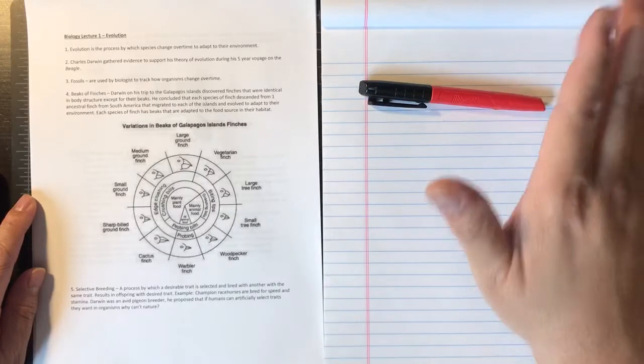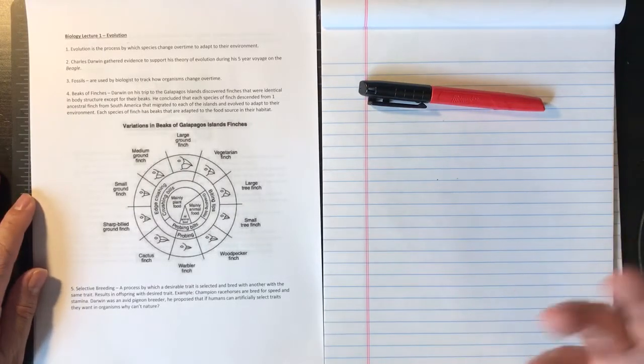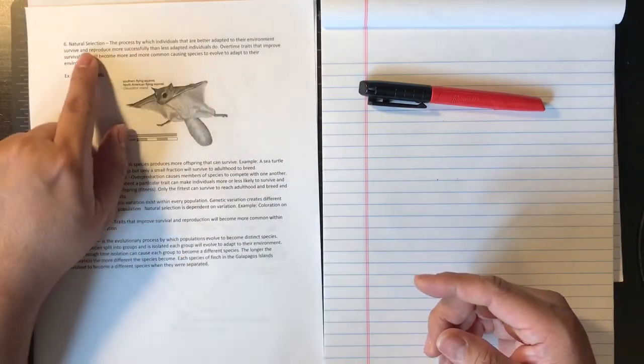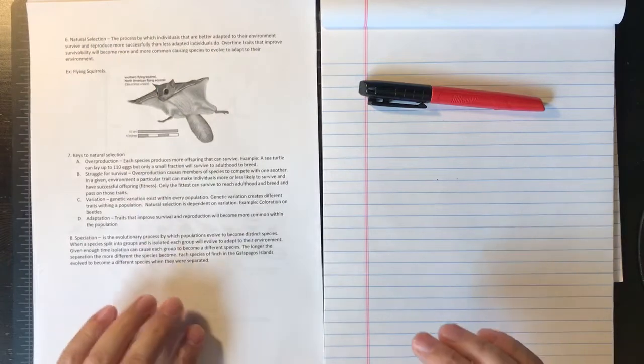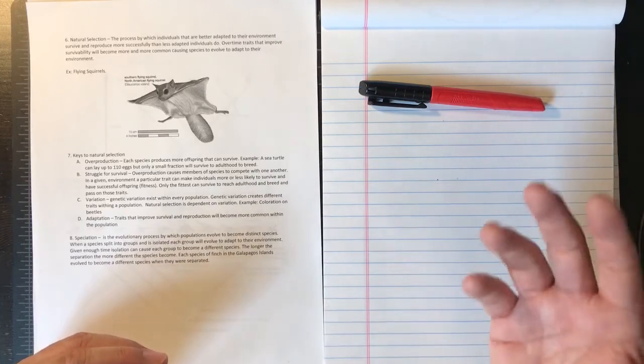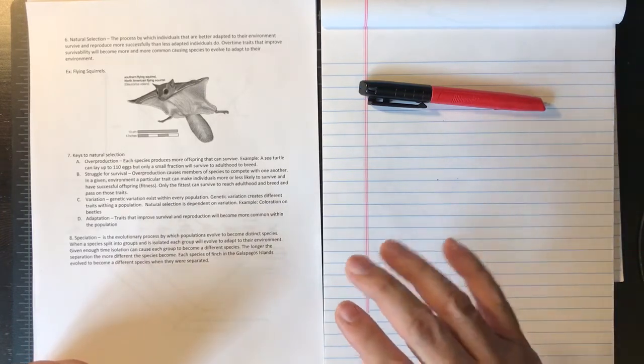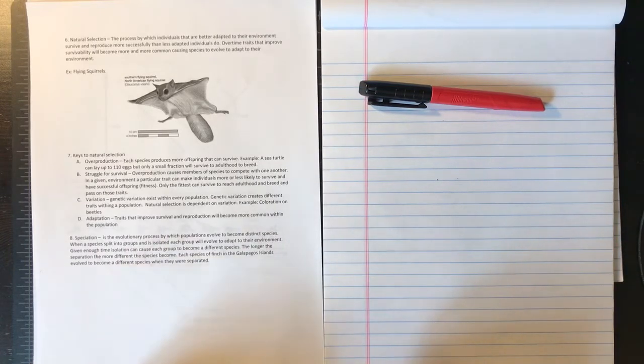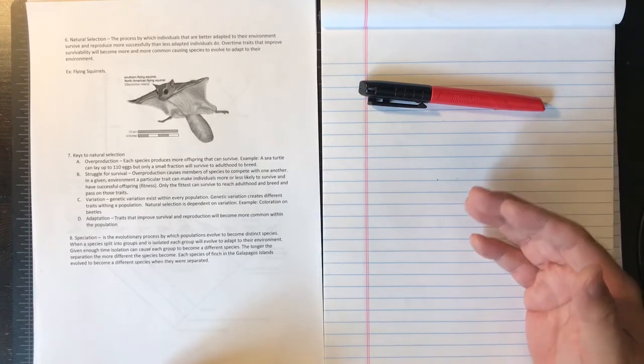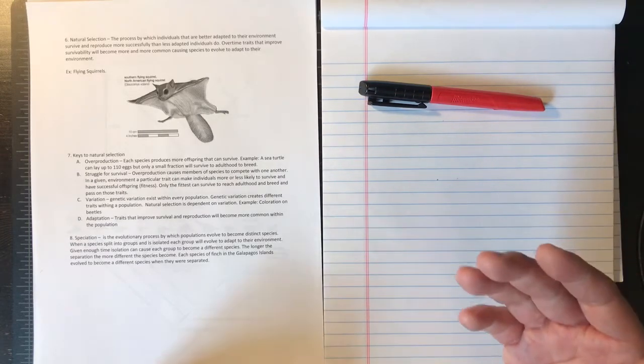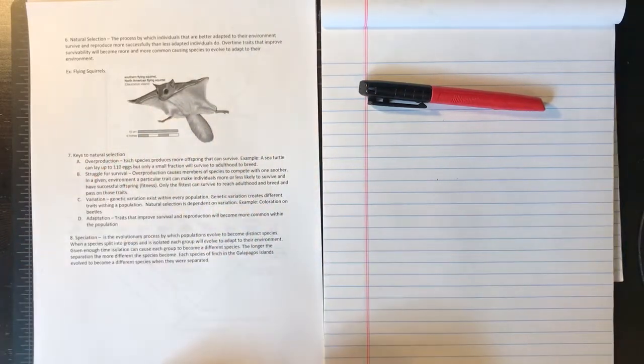According to Darwin, nature could also select traits, which brings us to this idea of natural selection. Number six: natural selection is the process by which individuals that are better adapted to their environment survive and reproduce more successfully than less adapted individuals do. Now over time, these traits that improve survivability will become more common, causing species to evolve to adapt to their environment.